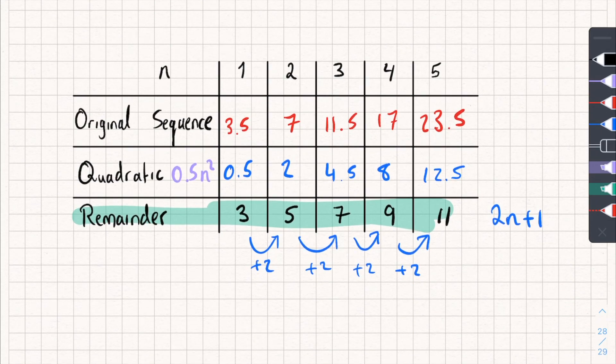And we combine them all together to get the nth term of the quadratic sequence, which is 0.5n squared plus 2n plus 1. Lovely stuff.